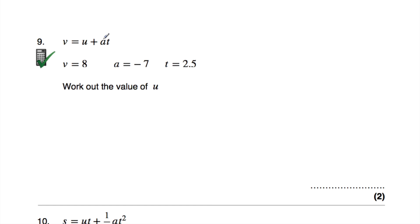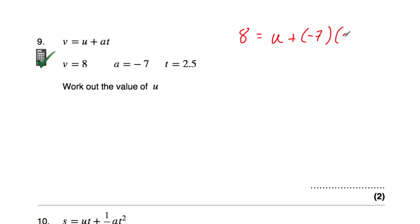Question number 9: v equals u plus at, with v equal to 8, a equal to negative 7, and t equal to 2.5. We've been asked to work out the value of u. So 8 is equal to u, plus negative 7 times 2.5. Negative 7 times 2.5 is equal to negative 17.5.